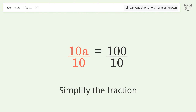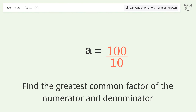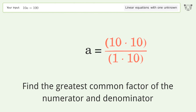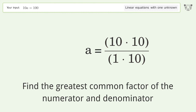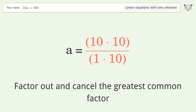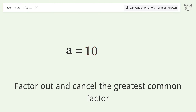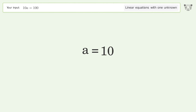Simplify the fraction by finding the greatest common factor of the numerator and denominator. Factor out and cancel the greatest common factor. The final result is a equals 10.